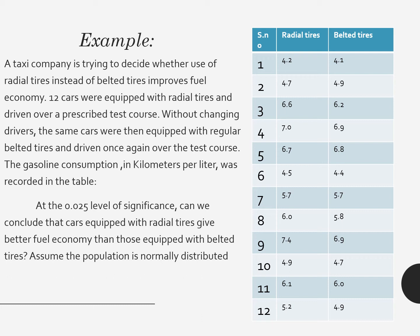Here you can see there are two types of samples given. The gasoline consumption in kilometers per liter of radial tires when the car is used with radial tires, and when the car is used with belted tires, the gasoline consumption in kilometers per liter is given. We are going to go to the next page.